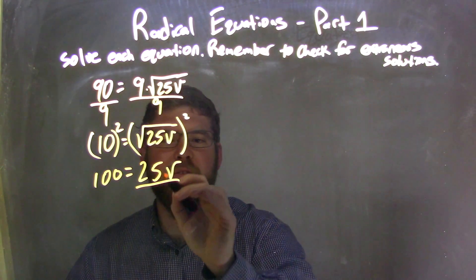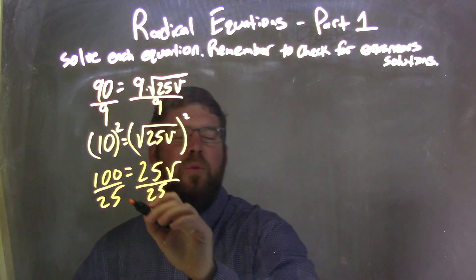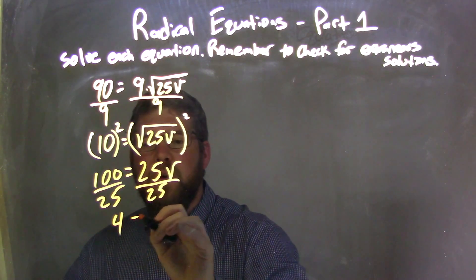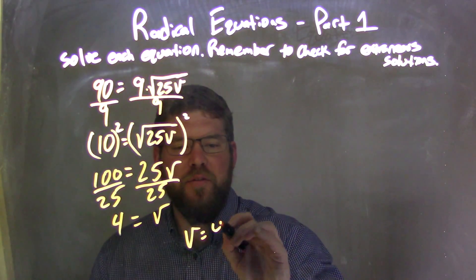Divide both sides by 25 because there's multiplication going on here. 100 divided by 25 is 4, equals V. Now we want to write V first because that looks nicer. So V equals 4.